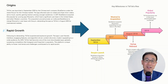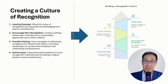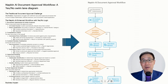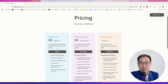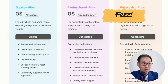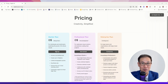With Napkin AI, you can turn text into literally all kinds of visuals — from timelines, to strategy, to a concept, even workflows. This is a fantastic tool for not just professionals, but even students or educators. And the good news is that because Napkin is in its beta mode, you can literally sign up for a professional plan at no cost at all. You get unlimited Napkins, unlimited visuals — it's a great opportunity to test it out.